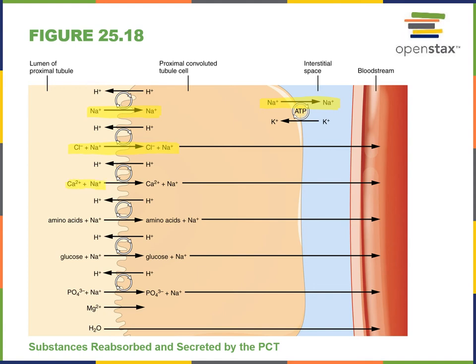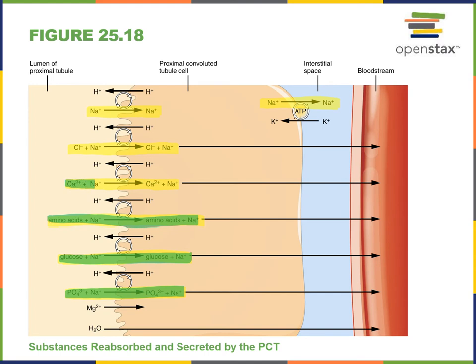Here we can see the sodium-dependent chloride transport, sodium-dependent calcium transport, sodium-dependent amino acid transport, sodium-dependent glucose transport, and sodium-dependent phosphate transport — all secondary active transport mechanisms driving reabsorption. These substances are being reabsorbed: chloride, calcium, amino acids, glucose, and phosphate are all reabsorbed via secondary active transport across the apical surface of the proximal convoluted tubule epithelial cell.